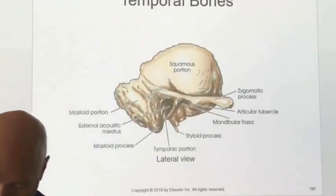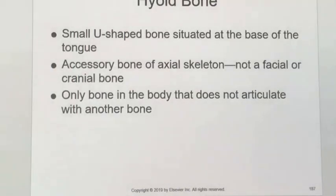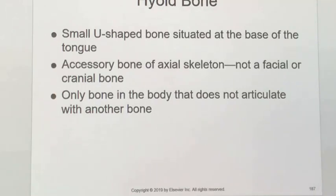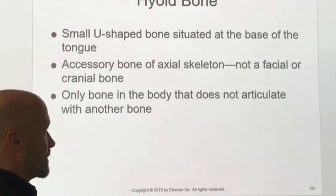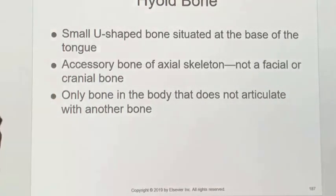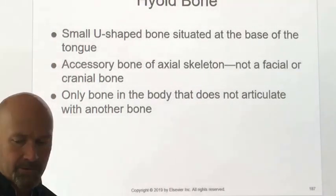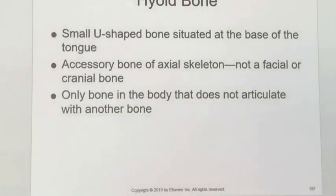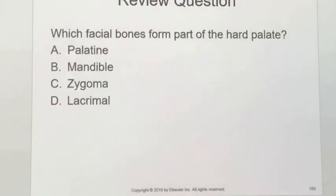Regarding the temporal bone, the only significance for us is that the mandibular fossa is where the condyle articulates, allowing that rotation whenever you open and close your mouth. The hyoid bone is not significant for our purposes — it's a small bone, the anchor of the tongue, with no bony articulation and only ligamentous attachments. We just don't do imaging of it.